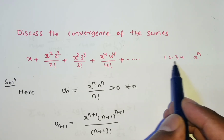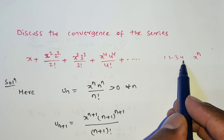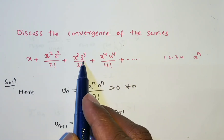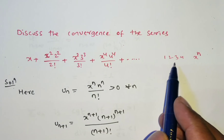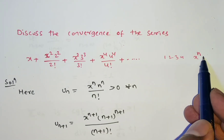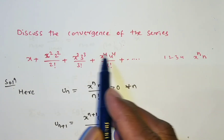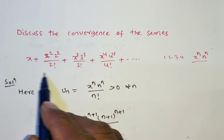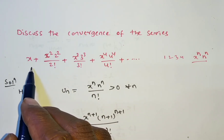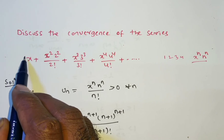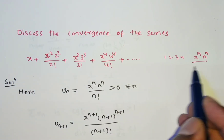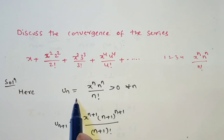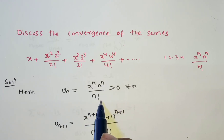For n=2, 3, 4 — satisfied. The base in the numerator follows 1, 2, 3, 4, so we write n to the power of n. The denominator follows 4!, 3!, 2!, 1! — which is n factorial. The first term can be written as 1¹/1! as well. So uₙ = xⁿ · nⁿ / n!.